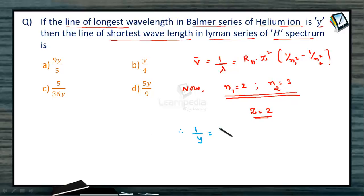Therefore, 1 by Y equal to Rh into Z square is 4 into N1 for Balmer series is 2. So 1 by 2 square minus N2, because we want the line of longest wavelength. Therefore, N2 is equal to next higher number of N1 that is 1 by 3 square. So this will come out to be 1 by Y is equal to 4RH into 1 by 4 minus 1 by 9, therefore 5 by 36.